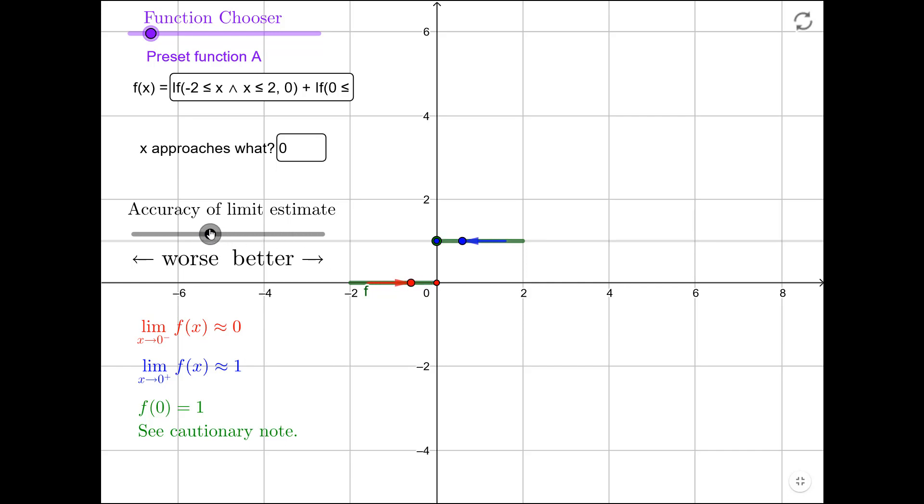The slider controls how close these moving blue and red points are to the x value of 0. So the red point here, we have an x value, maybe negative 2 thirds or something. As the estimate gets better, that gets closer and closer to x equals 0.